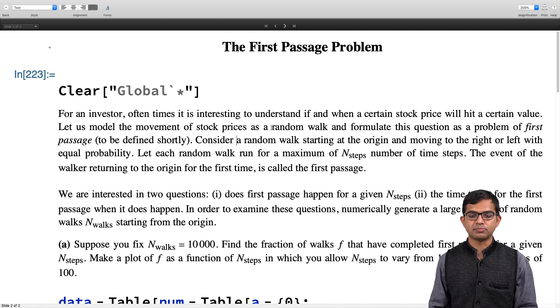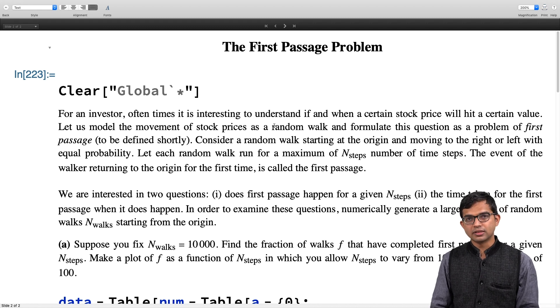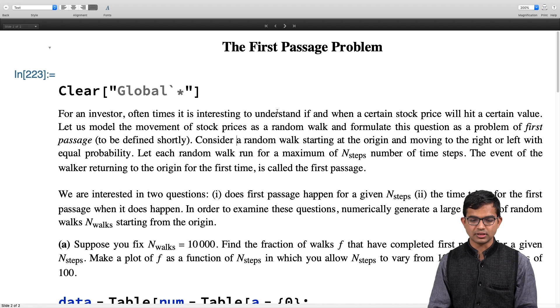You can think of the 1D random walker who starts off at the origin and does some complicated path. And then you ask whether they come back to the origin at all. And if they do, how much time will it take? And these are the two questions that the stock investor would be interested in.